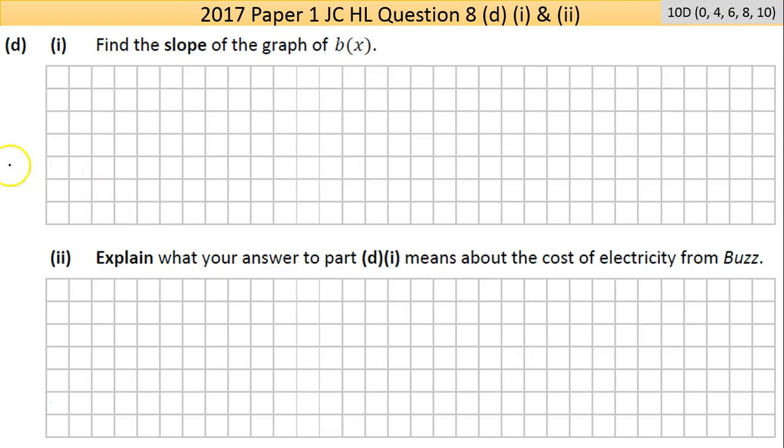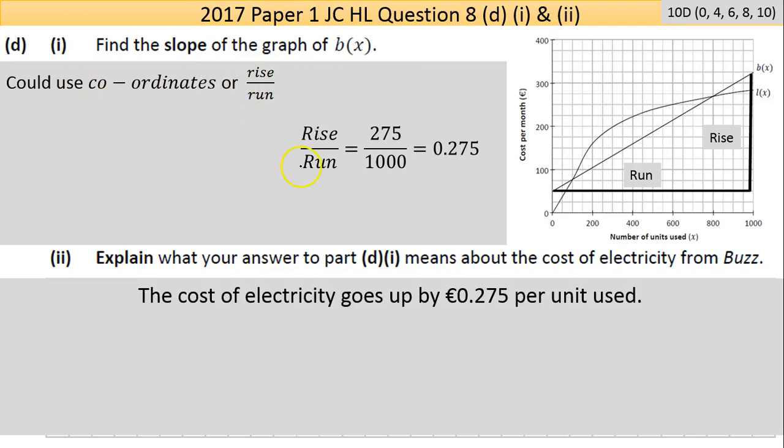Part D, parts 1 and 2 are marked together, 10 marks here. Find the slope of the graph of B(x). We've done this already, it's linear so it's easy to find the slope. Rise over run, so I've written it there. I took a little triangle here, this will be the same answer. It's 275 over a thousand which is a quarter.